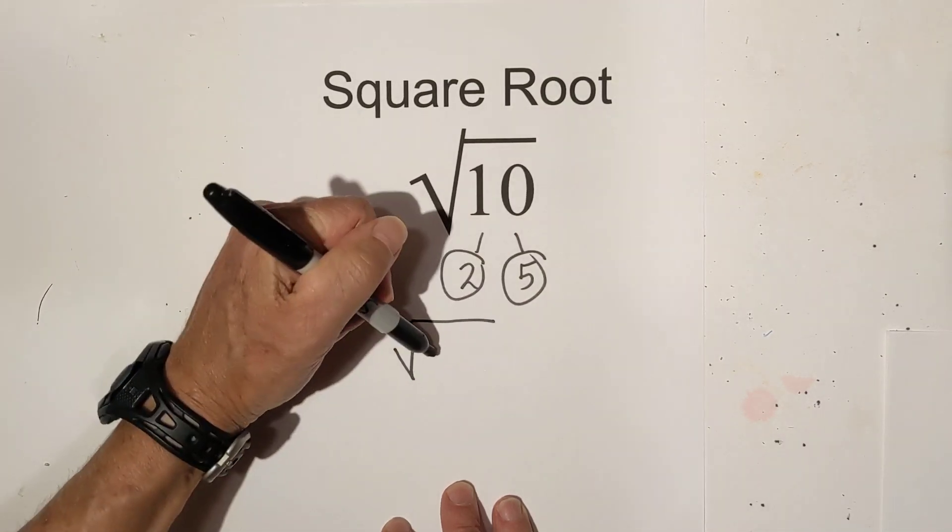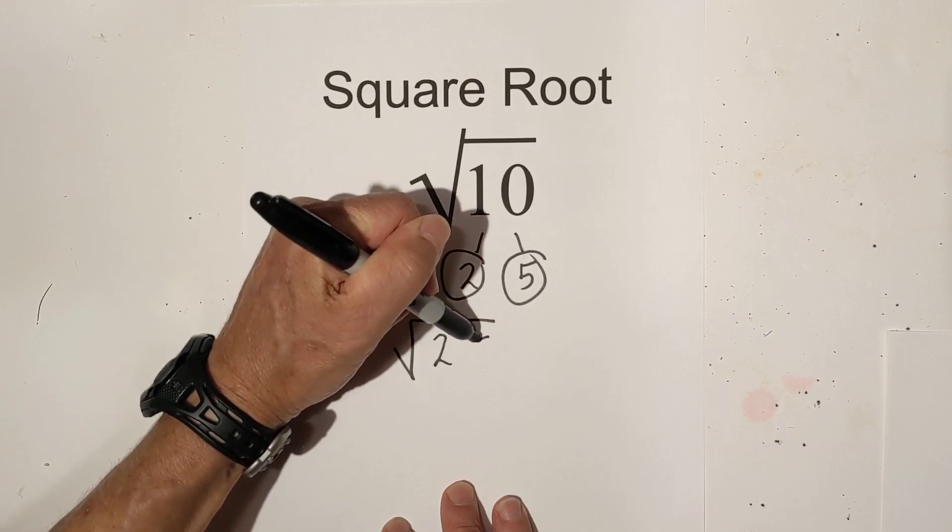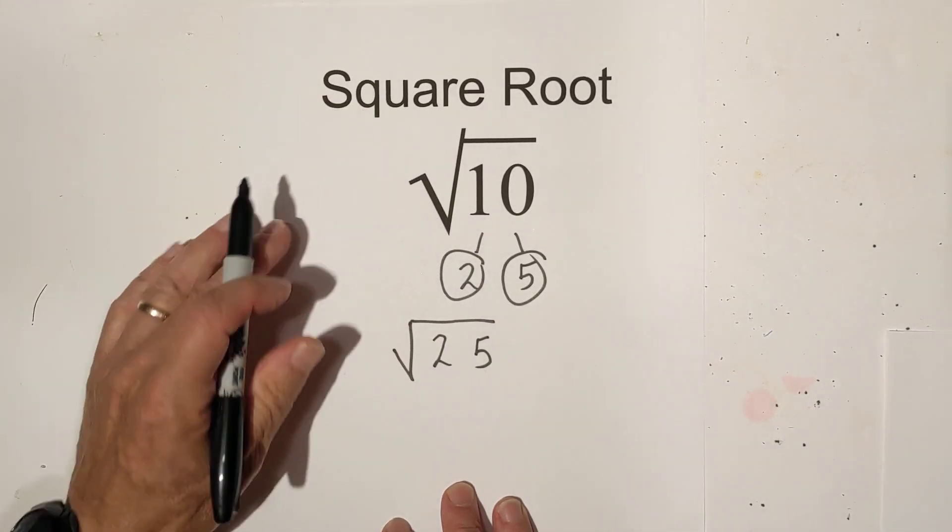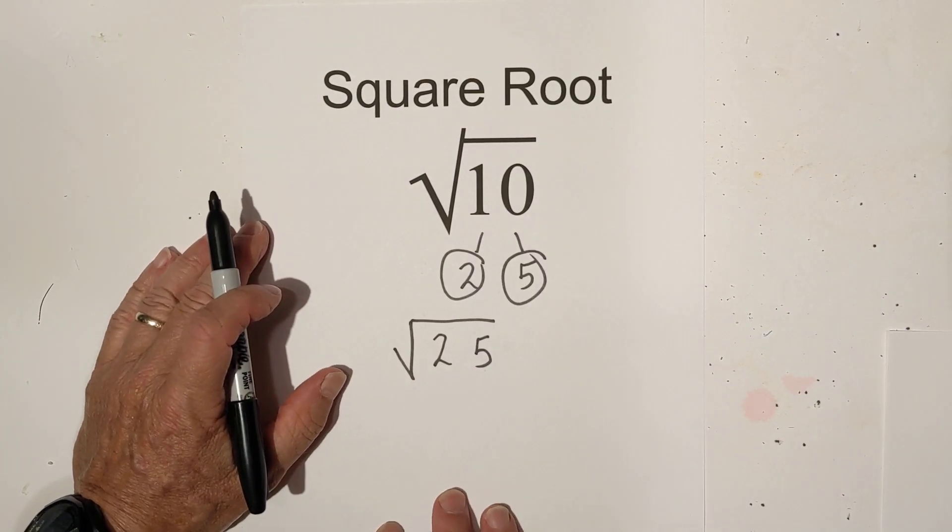If you put them back under the radical sign then you know that you do not have pairs to pull out. So it is simplified as square root 10.